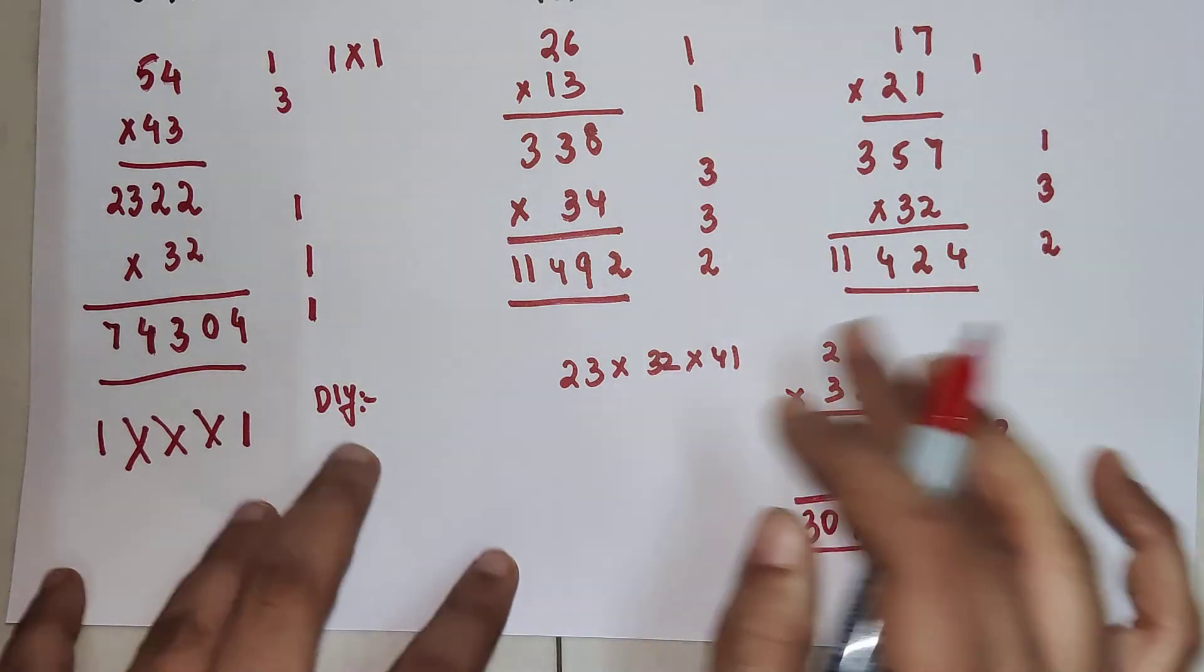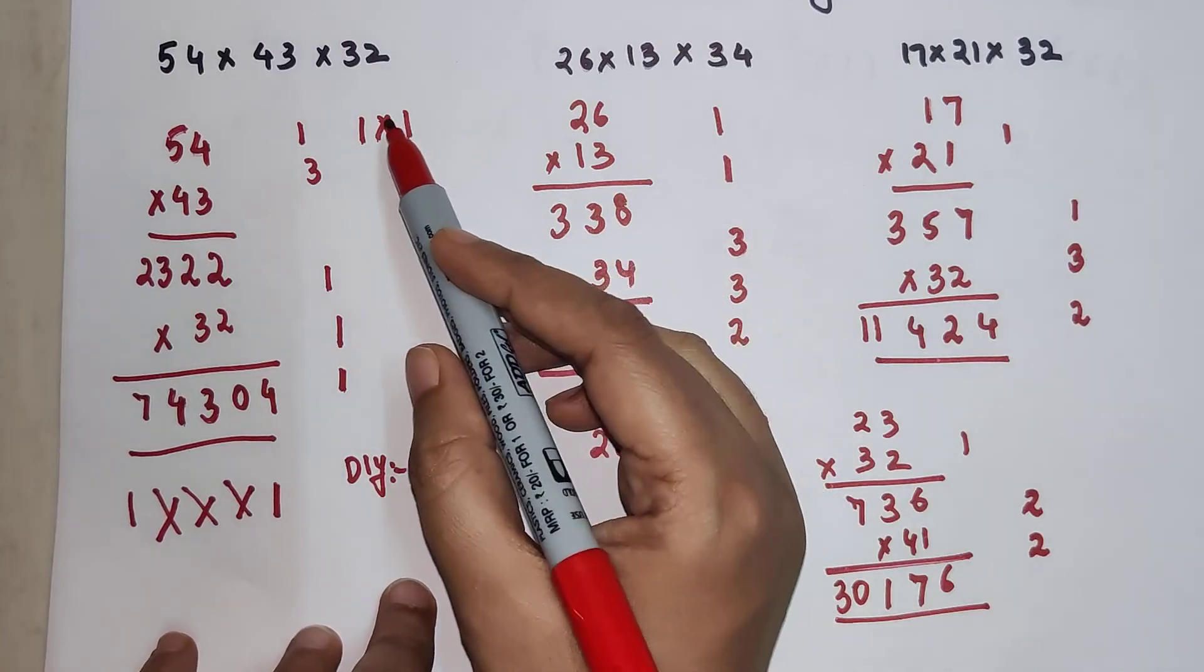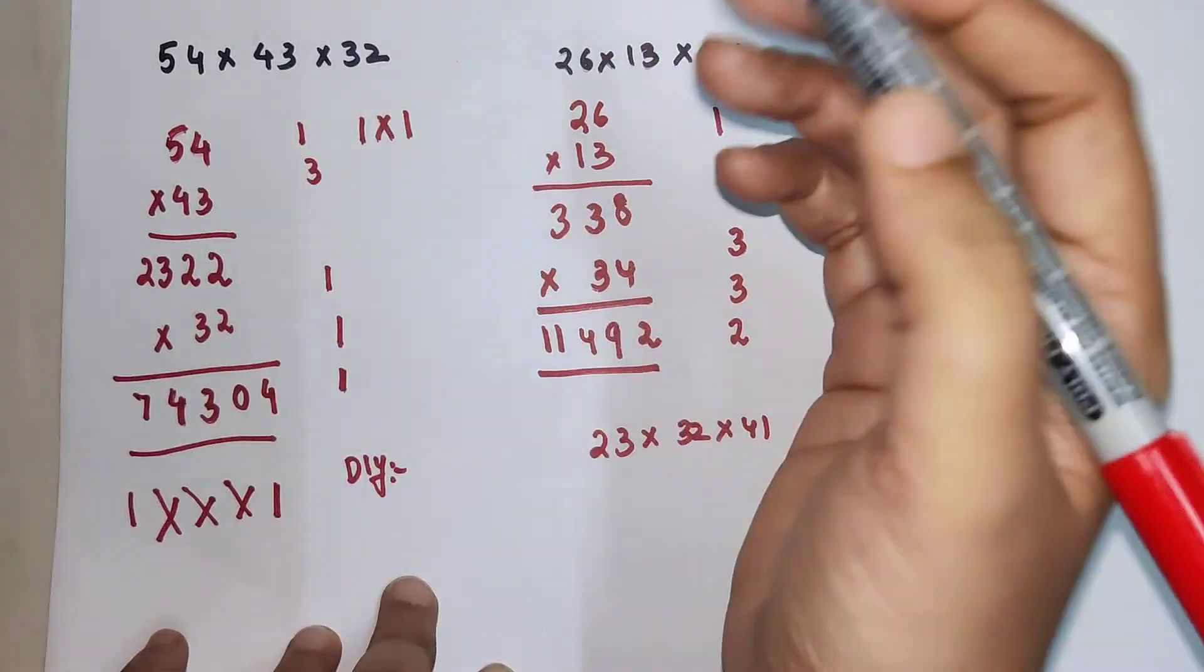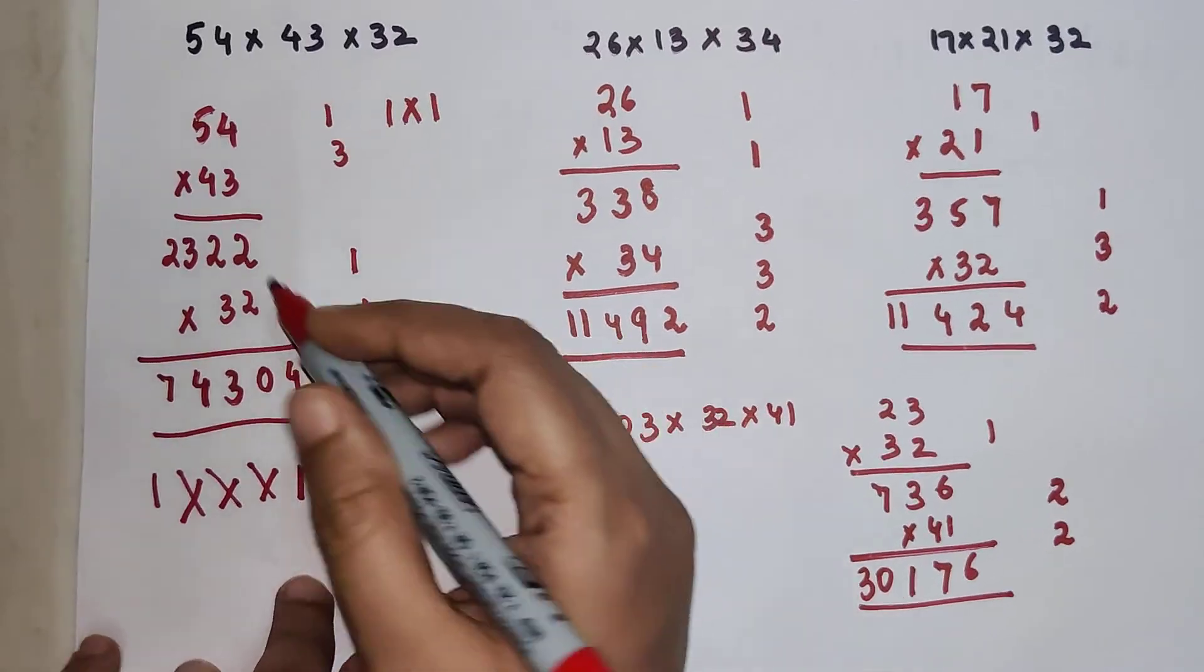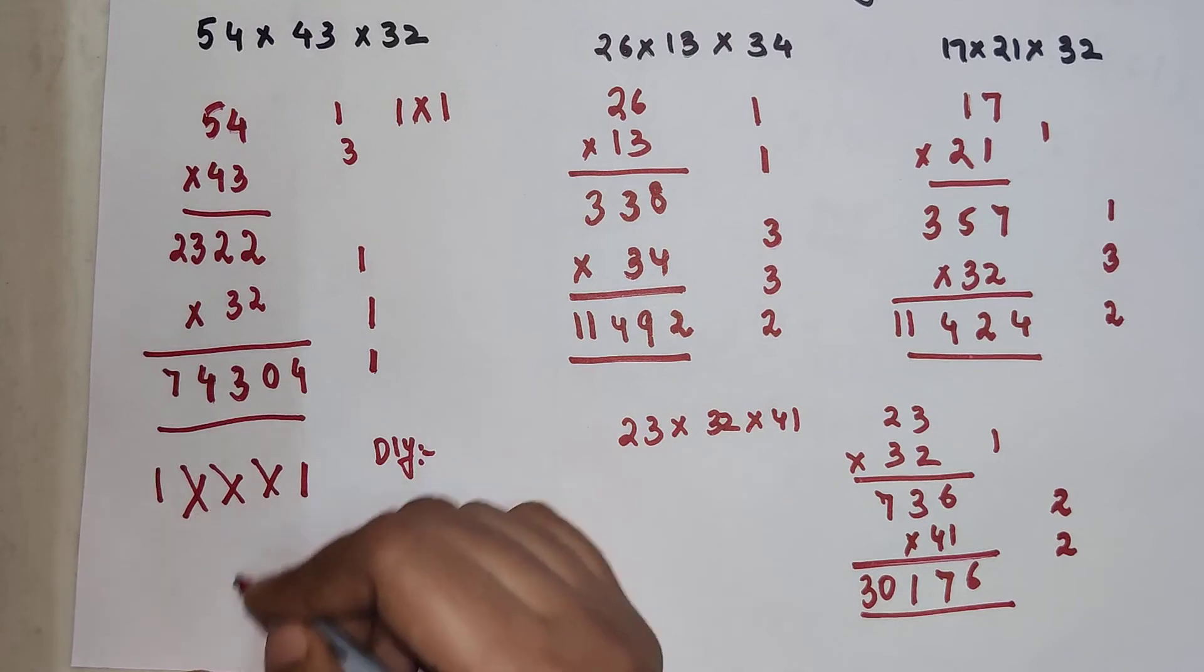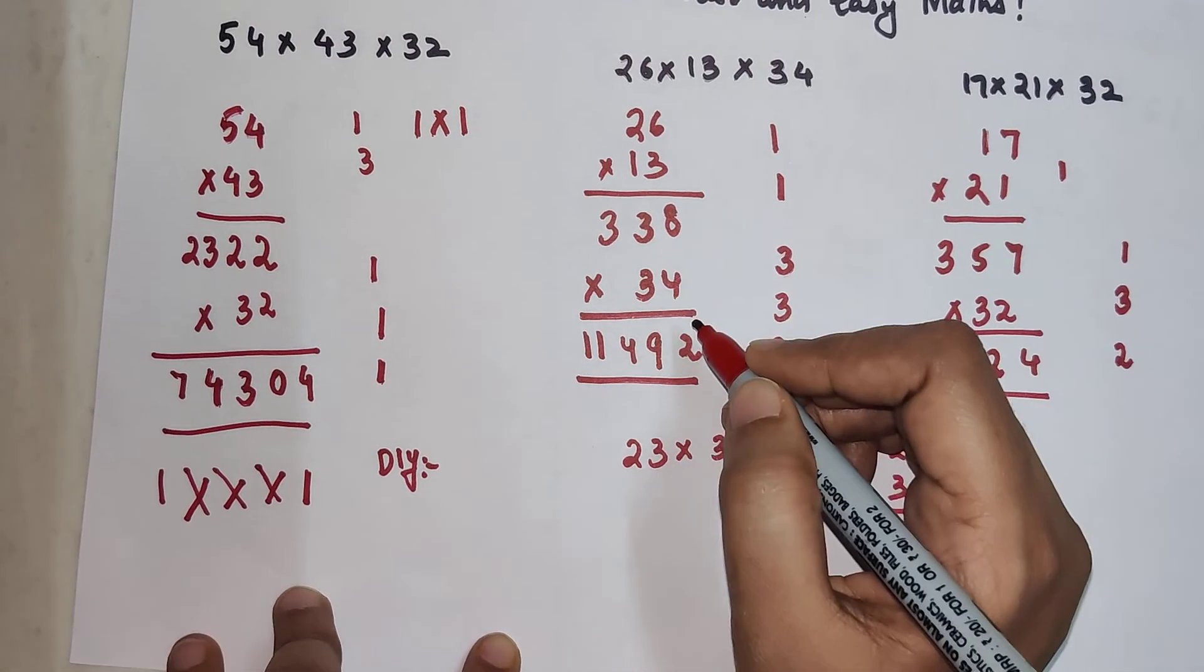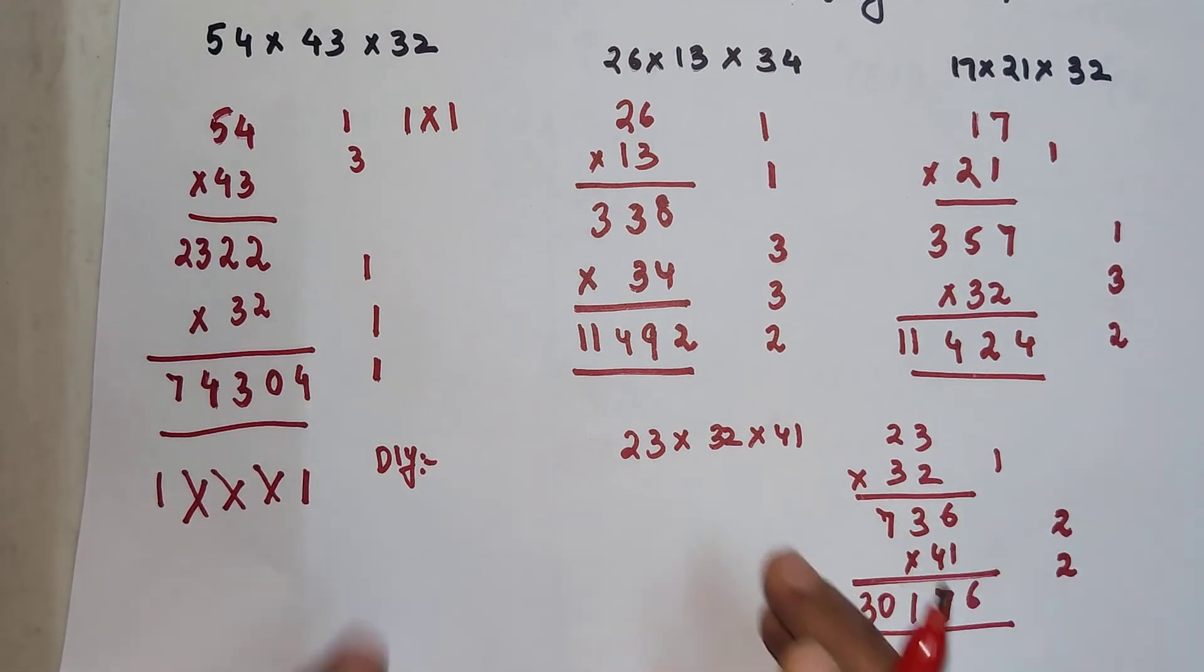Very quickly just remember for 2 digit into 2 digit is 1 cross 1. Please understand when you do the cross multiplication you have to add the 2 products. Similarly for this one when you have say if you have 4 digit into 2 digit then it is 1 triple cross and 1. Similarly if it is 3 digit into 2 digit then again 1 double cross and 1. I hope you are getting the hang of it.